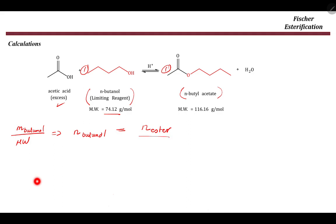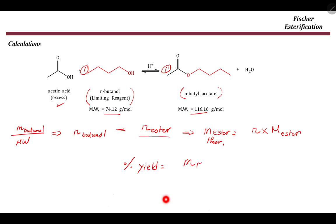Once we calculate the number of moles of ester, we can calculate the theoretical mass of the ester, which equals moles times the molar mass of n-butyl acetate, which is 116.16 g/mol. To calculate the percentage yield, divide the actual mass obtained in the lab by the theoretical mass and multiply by 100.